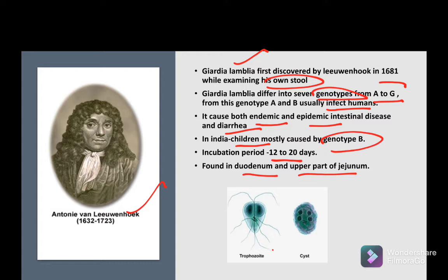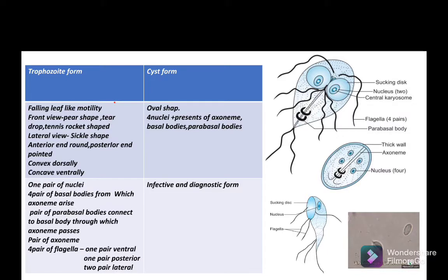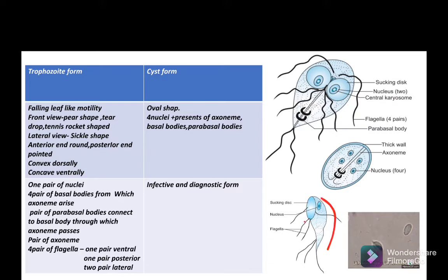Morphologically it has two forms: one is the trophozoite form and another is the cystic form. The trophozoite form has a falling leaf motility. In front view it is pear-shaped, like a teardrop and tennis racket shape. In lateral view it is sickle-shaped, with a rounded anterior end and a pointed posterior end. Dorsally it is convex and ventrally it is concave.